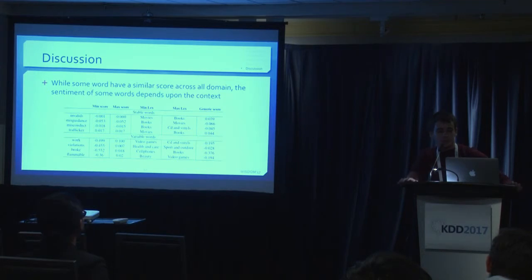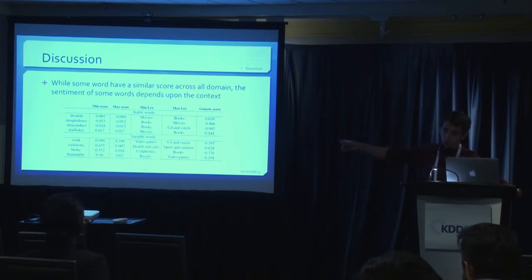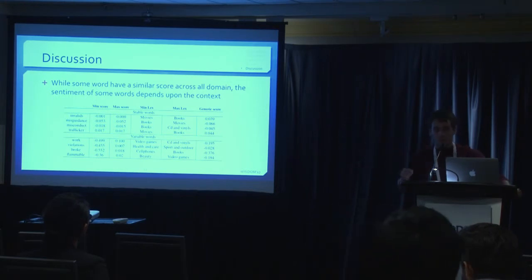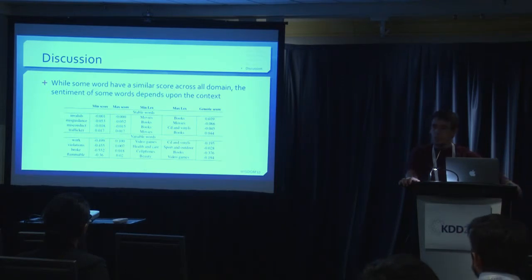Now, here's a few points I'd like to highlight. So, we noticed that some words don't vary much depending on the lexicon. So we computed the standard deviation for each word across the 15 domains. And the first part, the upper part of the table is the words that we call stable. So those are words that don't change across all lexicon, actually. As you can see, the trafficker has the same score from movies. So, you have the lowest score and the highest score. So the lowest score is 0.017, the highest is 0.017, which is the same. So, that word doesn't change across the 15 domains. This remains true for a few words. So those are just examples, but we have a lot of them.